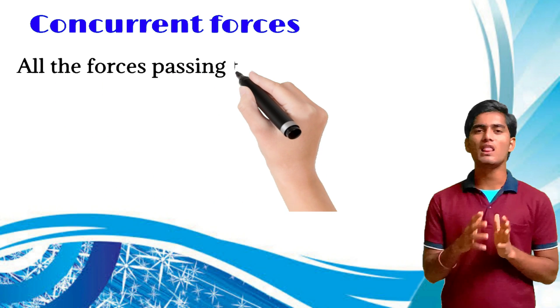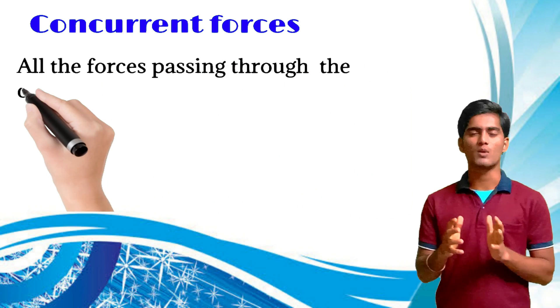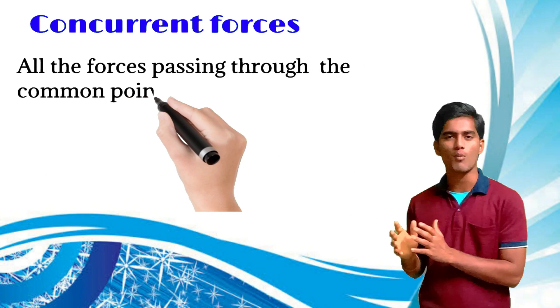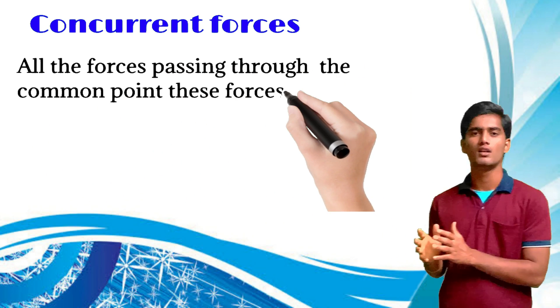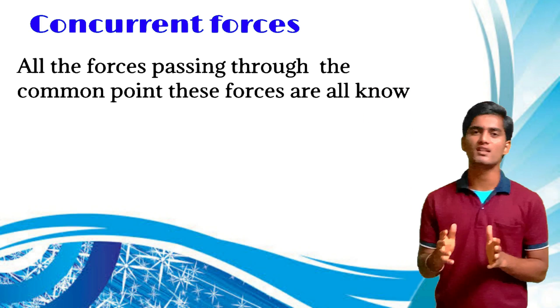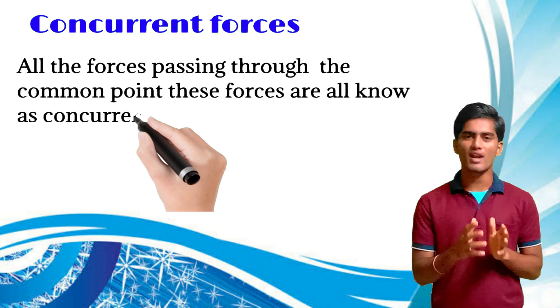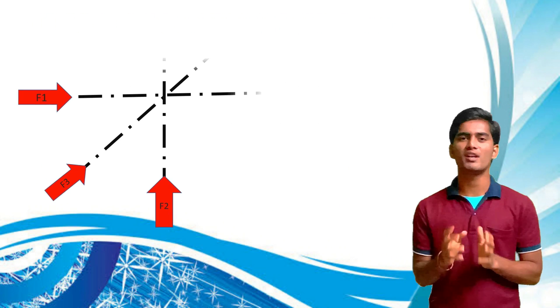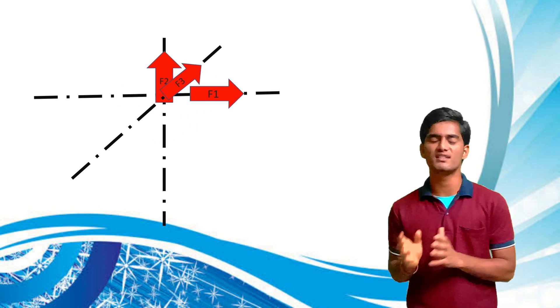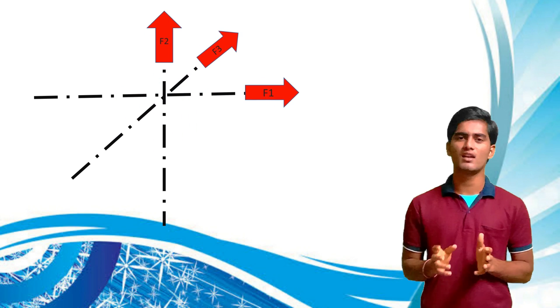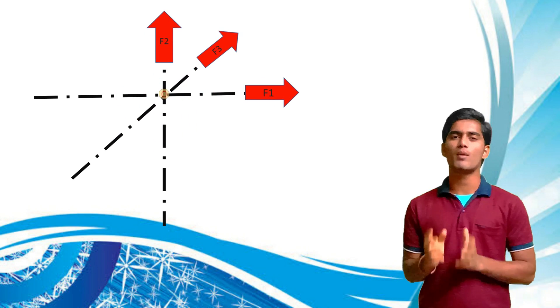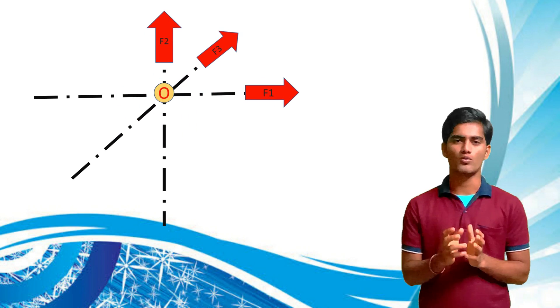Fifth one is concurrent forces. All the forces are passing through a common point. These forces are known as concurrent forces. For example, F1, F2, F3 — these are all forces having a common point O.